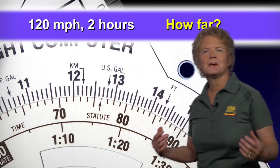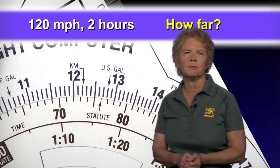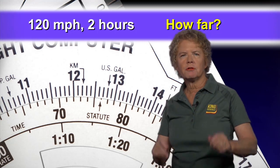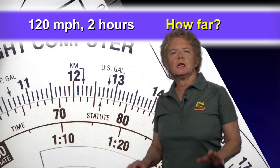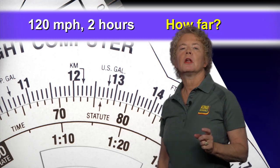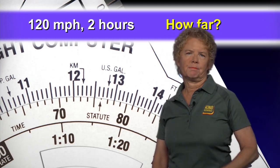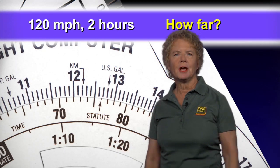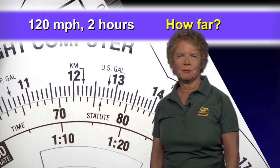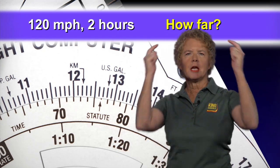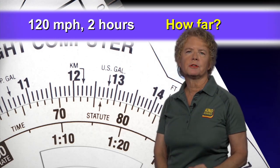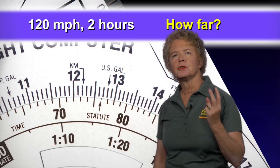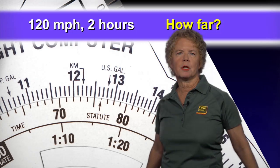Here's another set of numbers the FAA will give you. You're traveling 120 miles an hour, and instead of flying a certain distance, you fly for a certain length of time. At 120 miles an hour, you fly for two hours. The question is how much distance will you have traveled? Just in your head: if you're flying 120 miles every hour for two hours, that's twice 120, or 240 miles. But let's look at it on the flight computer.